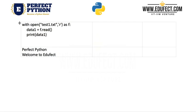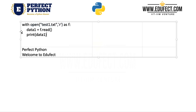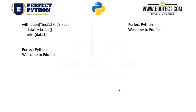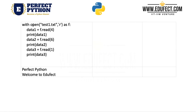Here we are using the 'with' statement: with open('test1.txt', 'r') as f. What 'with' does is it automatically closes the file once we get out of this indented block, so we do not need to remember to close it. This is the preferred way in which we use files. We then say data1 = f.read(), which reads all the content into data1, and print(data1) prints it on the screen.